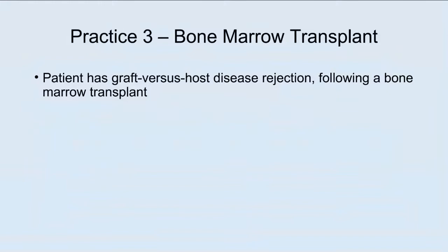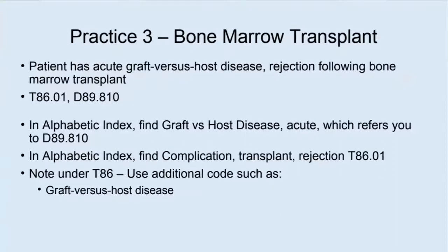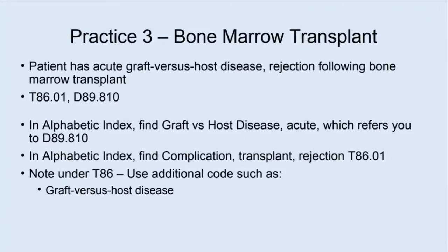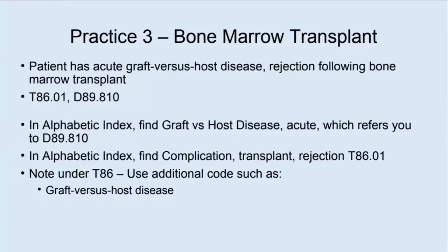Practice three: Patient has graft-versus-host disease rejection following a bone marrow transplant. This is acute. The answer is T86.01 and D89.810. In the alphabetic index, find graft-versus-host disease, acute, which refers you to D89.810. In the alphabetic index, find complication, transplant, rejection, which gives you T86.01. Sequencing is so important in diagnosis coding — T86 first, use additional codes such as graft-versus-host disease.